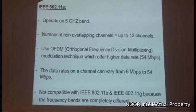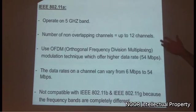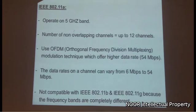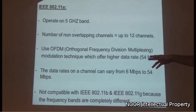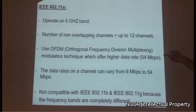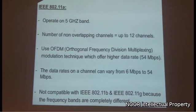IEEE 802.11a operates on the 5 GHz band, which is not as common in Egypt. It supports up to 12 non-overlapping channels and uses OFDM modulation, providing data rates from 6 Mbps to 54 Mbps. It is not compatible with 802.11b or 802.11g because it operates on the 5 GHz band while those standards operate on 2.4 GHz.